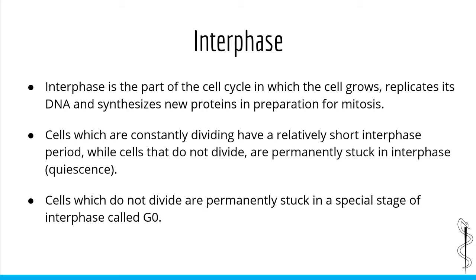Interphase is the part of the cell cycle in which the cell grows, replicates its DNA, and synthesizes new proteins in preparation for mitosis. Cells which are constantly dividing — such as bone marrow cells, gut epithelium, skin, and hair follicles — spend a short period of time in interphase, while cells which do not divide, such as neurons and muscle cells, are permanently stuck in interphase. Neurons and muscle cells which do not divide are said to be in a stage of interphase known as G0.